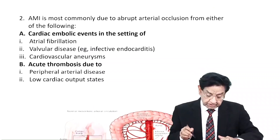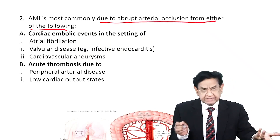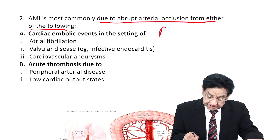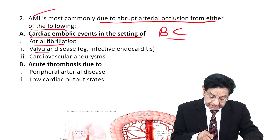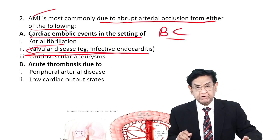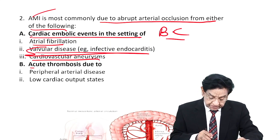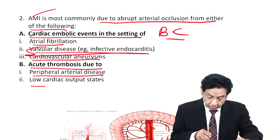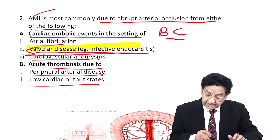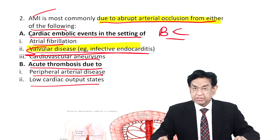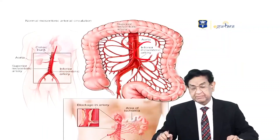Acute mesenteric ischemia leads to abrupt arterial occlusion from several causes. In general, cardiac embolic events in the setting of atrial fibrillation, valvular disease — like in this case where endocarditis with vegetation led to embolic phenomena — cardiovascular aneurysm, or acute thrombosis due to peripheral arterial disease or low cardiac output state. In our case, the key word is abrupt onset due to an embolic phenomenon.